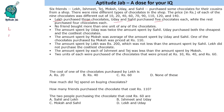Let us write their names: Lake, Ishmit, Tej, Moksh, Uday and Sahil. Lake purchased three, Uday and Sahil purchased five, and the rest purchased four chocolates each. No friend bought more than one unit of each chocolate type, meaning they each purchased distinct chocolates. So if they are buying three, four or five chocolates, they will buy different ones each time.